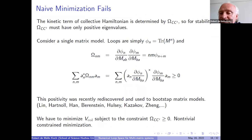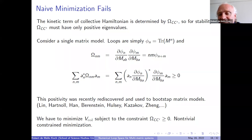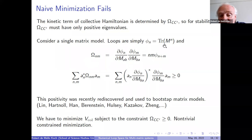Now, when you go ahead and try to solve the problem, it turns out that a naive minimization fails. Basically, the reason is that when you find the minimum of the effective potential and work out the eigenvalues of the loop joining matrix omega_{CC'}, it has some negative eigenvalues. So the potential really has a minimum when omega_{CC'} is not positive definite, and that is not a physical solution. Looking at omega_{nm} for a single matrix, where phi_n is trace M^n, omega_{nm} looks like n+m phi_{n+m-2}. This phi_{n+m-2} is the analogue of the Hankel matrix that was discussed earlier, and this positivity is exactly the same positivity as the one used in the bootstrap.